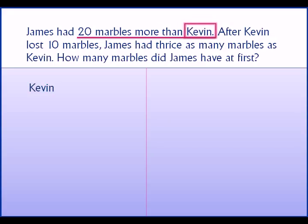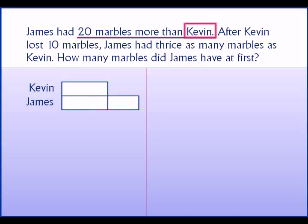We draw a model for Kevin first, and this we consider one unit. We know that James had 20 marbles more than Kevin, so James would have 20 more than Kevin.